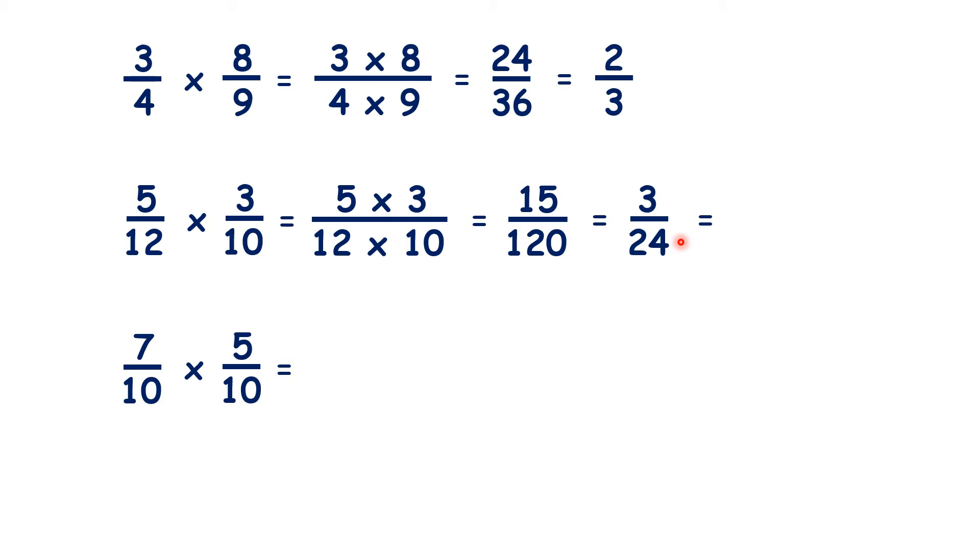But now we can simplify this fraction further, because both 3 and 24 are multiples of 3. So if we divide both the numerator and the denominator by 3, we get 1 eighth. So when you've simplified a fraction, it's always useful to check whether you could simplify it further.